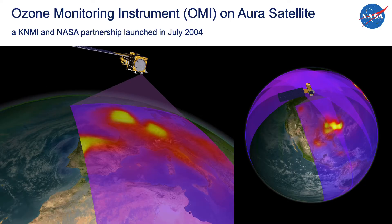The Ozone Monitoring Instrument, or OMI, was primarily designed to observe the Earth's stratospheric ozone layer. The instrument works by measuring the intensity of reflected sunlight at various wavelengths and detects the absorption features of various atmospheric trace gases, including ozone, nitrogen dioxide, sulfur dioxide, and formaldehyde.